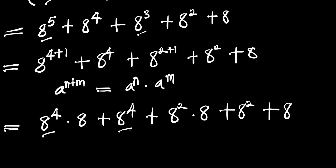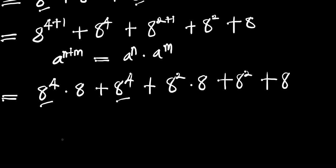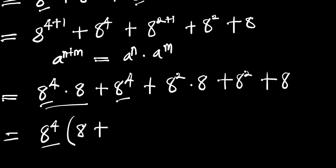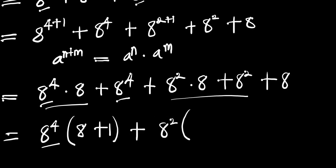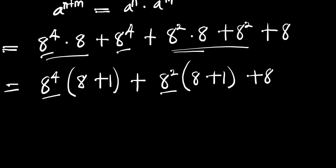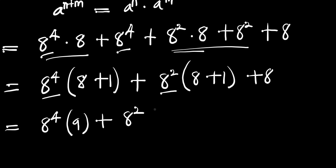Now we factor out 8 to the power of 4, because we have it in two places. We have 8 to the power of 4 times — dividing by 8 to the power of 4, we have 8 plus 1. Then we do the same thing: plus 8 to the power of 2, dividing by 8 to the power of 2, we have 8 plus 1, plus 8. So this gives us 8 to the power of 4 times 9, plus 8 to the power of 2 times 9, plus 8.